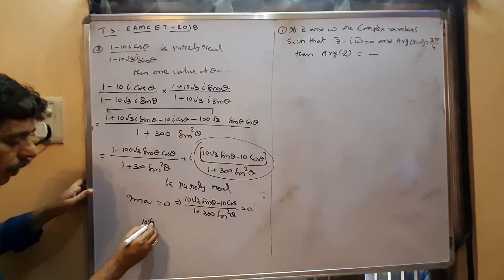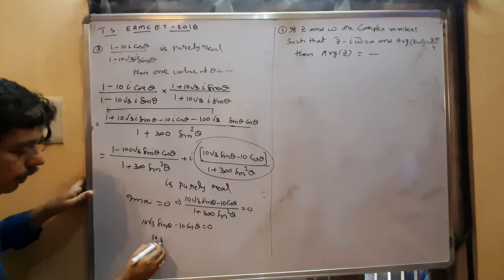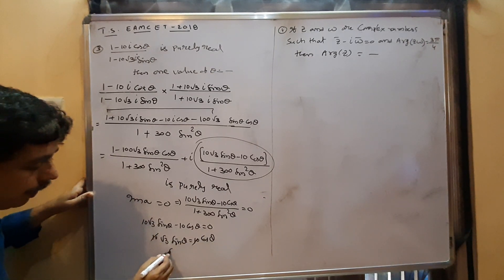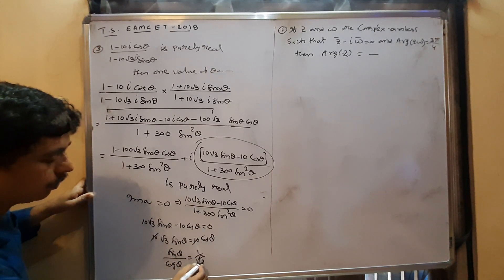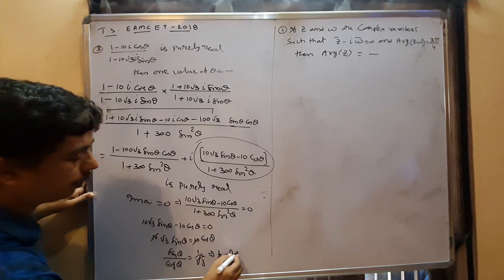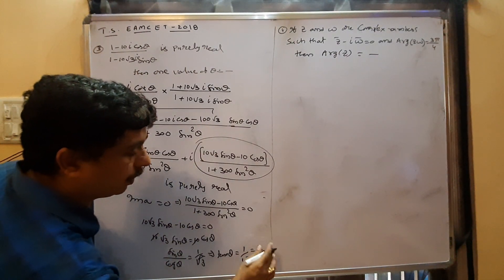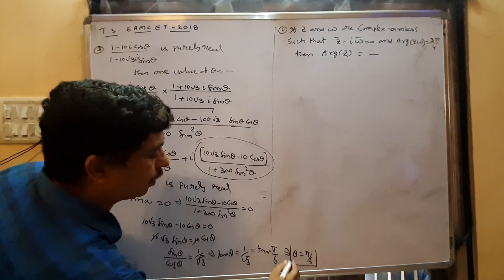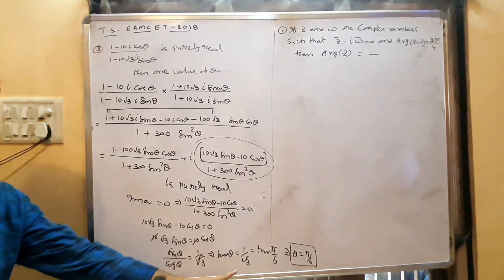From 10√3·sinθ = 10cosθ, we get sinθ/cosθ = 1/√3, so tanθ = 1/√3. Since tan30° = 1/√3, θ = 30° = π/6. The given complex number is purely real, imaginary part = 0, giving tanθ = 1/√3, therefore θ = π/6.